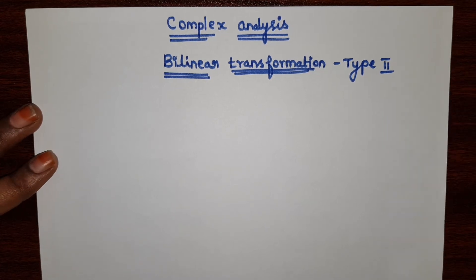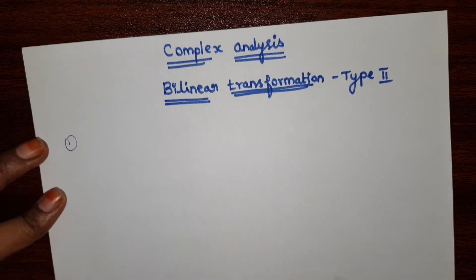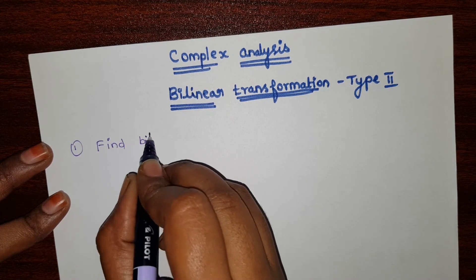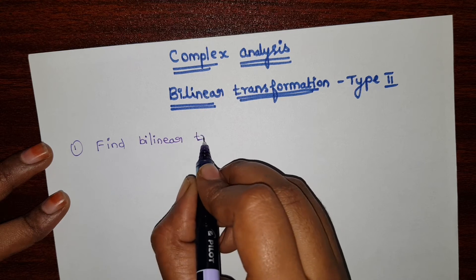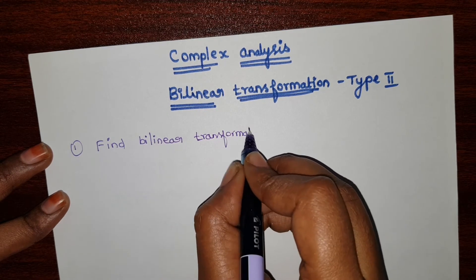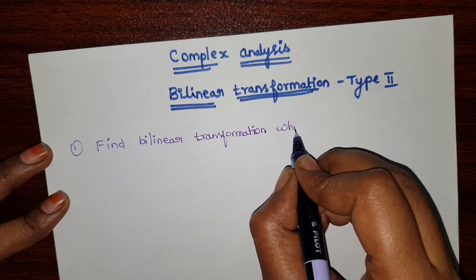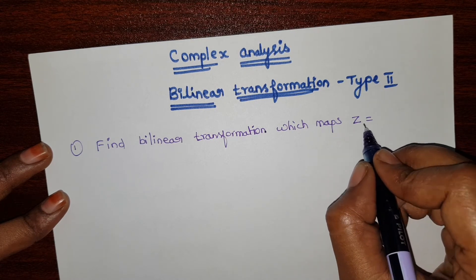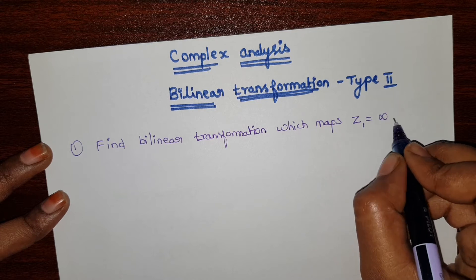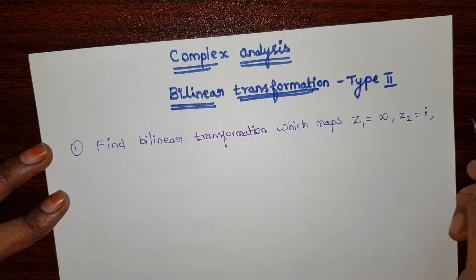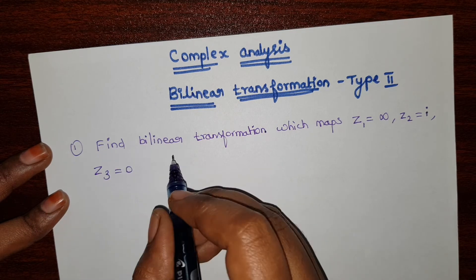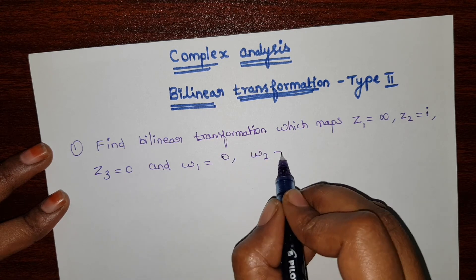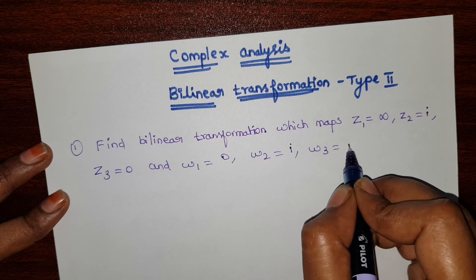We can see the problem. Find the bilinear transformation which maps: z1 equal to infinity, z2 equal to i, z3 equal to 0, and w1 equal to 0, w2 equal to i, and w3 equal to infinity.